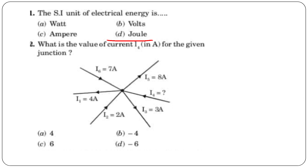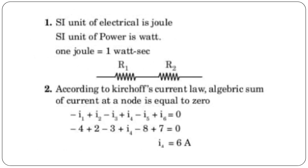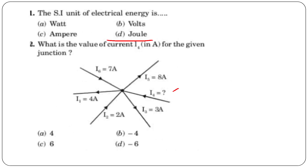Question: what is the value of current I4 for the given junction? We will apply Kirchhoff's Current Law. According to KCL, the algebraic sum of currents at a node is equal to zero — the algebraic sum of currents equals zero.